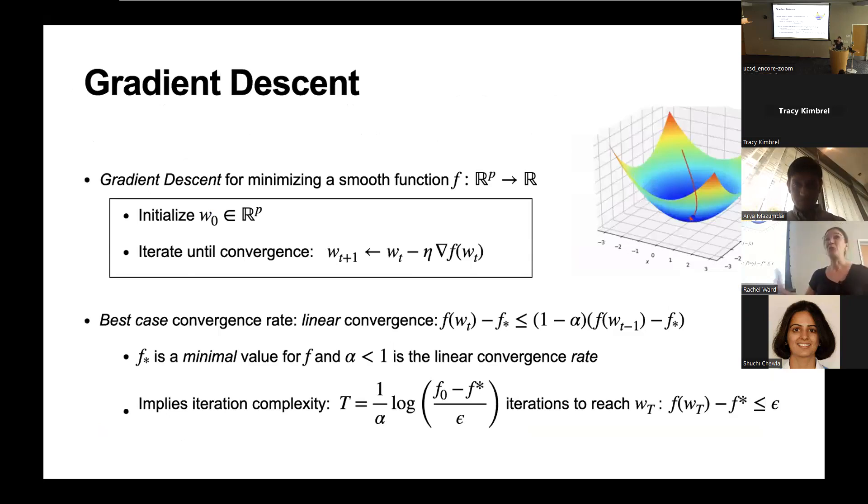This is a really quick recap. If you take an optimization class and learn about the theory for gradient descent, this is the gradient descent algorithm, an iterative first-order method for hopefully finding a minimum of a smooth function. We're going to focus on gradient descent with fixed step size, so eta, the step size, is going to be fixed throughout.